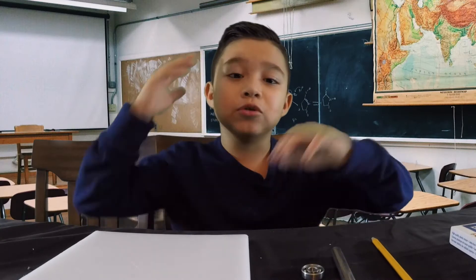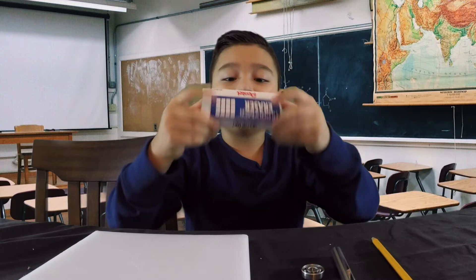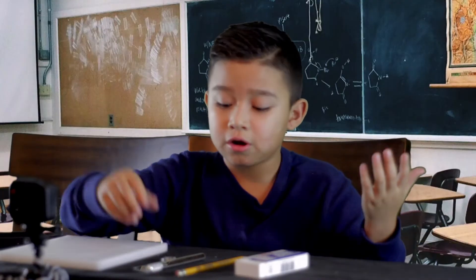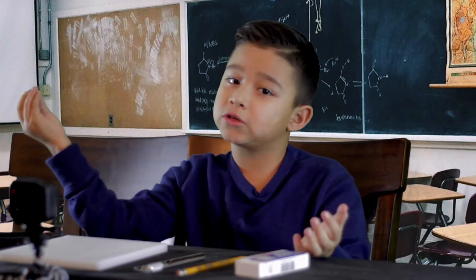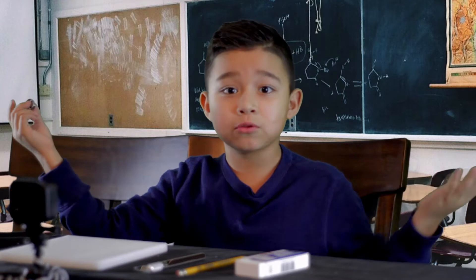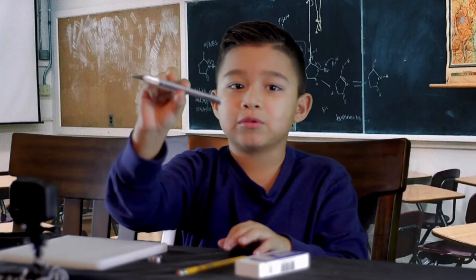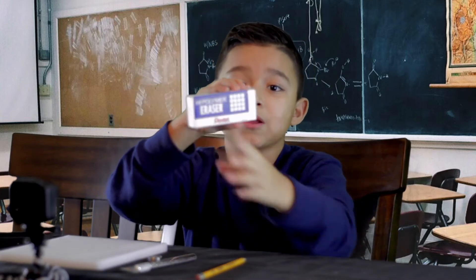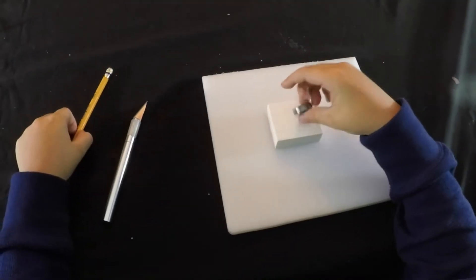Hey guys, welcome back to another new video. Today we're going to make an eraser fidget spinner. The materials are a bearing from an old fidget spinner (or you can buy one online or from the store), an exacto knife, a pencil, and an eraser. Now let's get started.